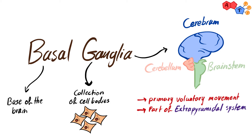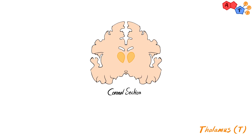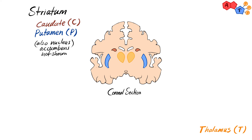The four major nuclei of the basal ganglia are: first, the striatum, which consists of the caudate, putamen, and nucleus accumbens. The striatum is known to be the major input nucleus. Second, we have the globus pallidus, which consists of two parts: globus pallidus interna and globus pallidus externa.